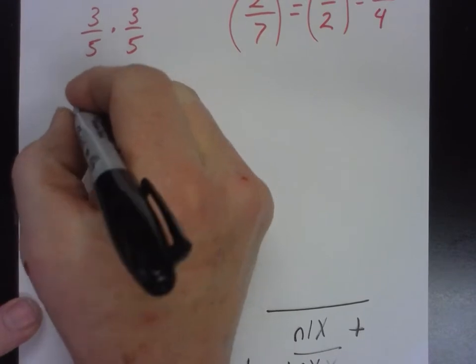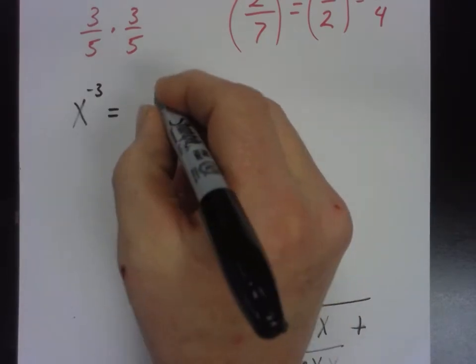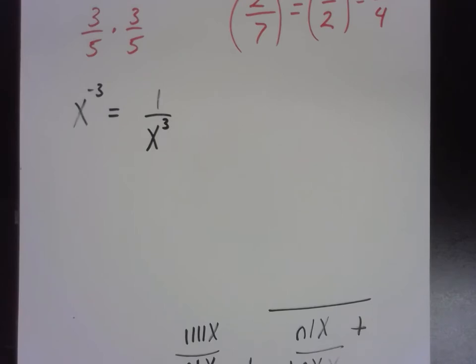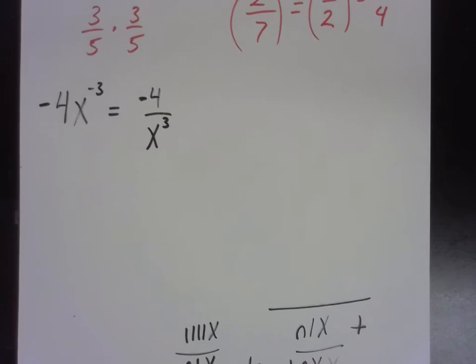If I have two-sevenths to the negative two, can we write that so it has a positive exponent? And then we can do it. Seven squared is 49, and two squared is four. Negative exponents? Not too hard to deal with, are they? Negative exponents, they're kind of a pain. Sometimes we just don't want to have a negative exponent. Can we write this so it doesn't have a negative exponent? One over x to the third.